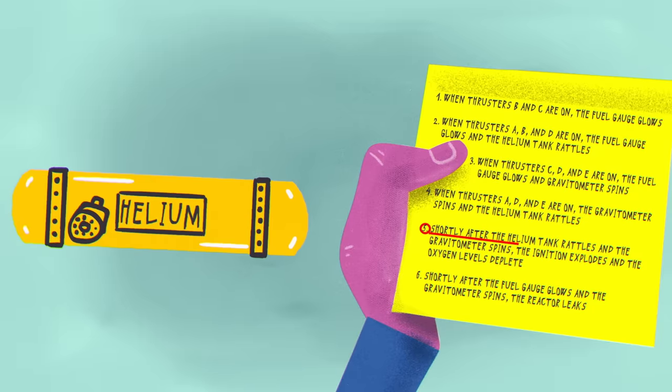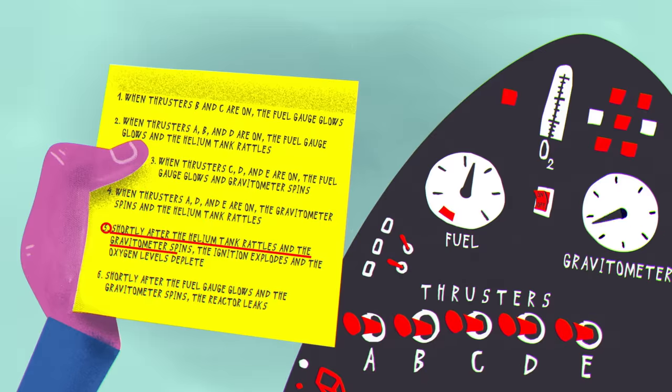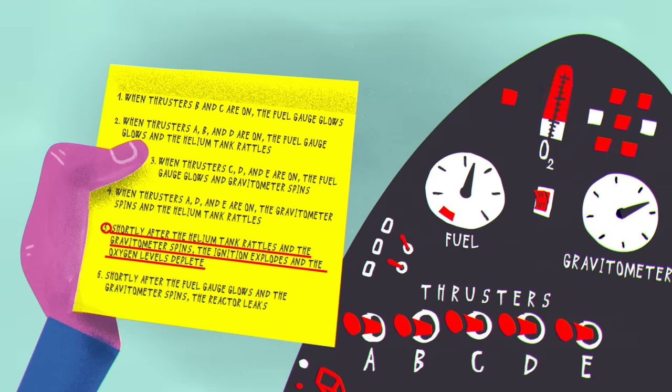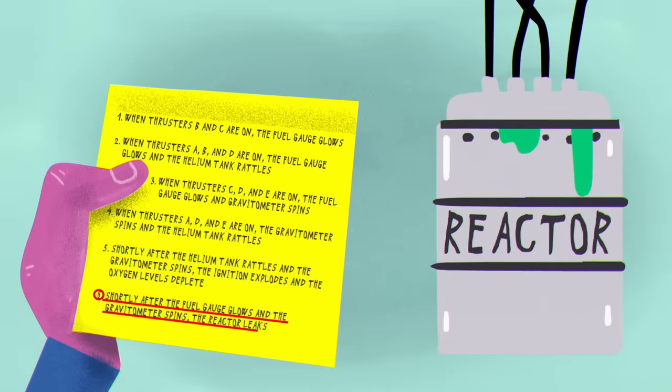5. Shortly after the helium tank rattles, and the gravitometer spins, the ignition explodes, and the oxygen levels deplete. 6. Shortly after the fuel gauge glows, and the gravitometer spins, the reactor leaks.